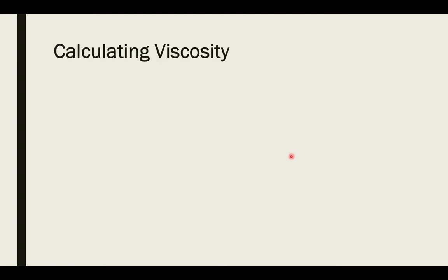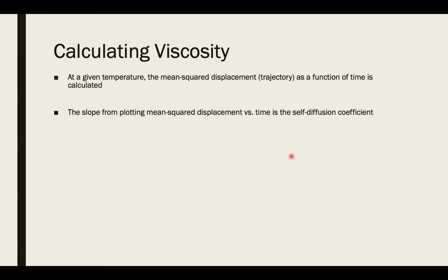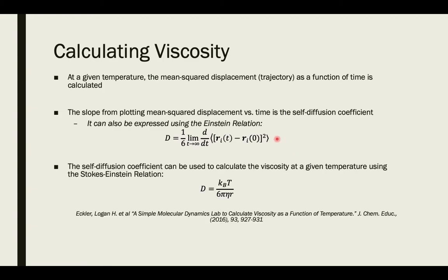Another important thing we need to take into account is how to calculate the viscosity. One of the output results from simulating an MD is the mean squared displacement as a function of time. When we plot that, we get a slope and we can use that slope to calculate the viscosity. This is also known as the self-diffusion coefficient, which can also be expressed using the Einstein relation. Then using the self-diffusion coefficient from the slope, we can calculate the viscosity using the Stokes-Einstein relation at a given temperature.